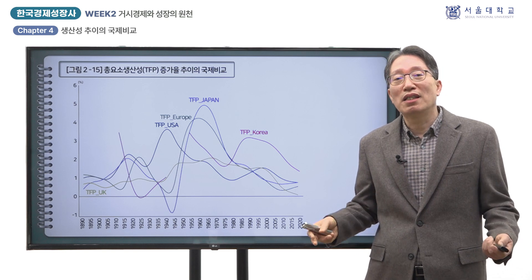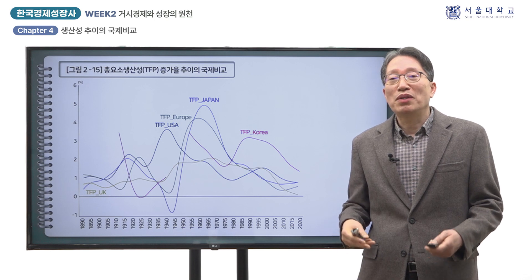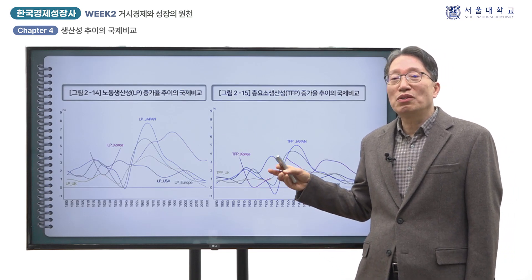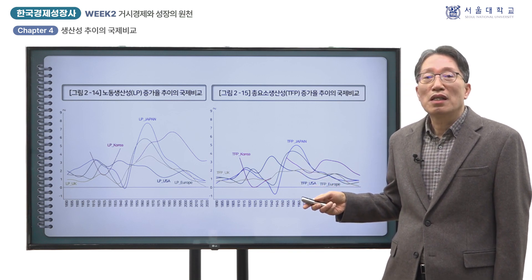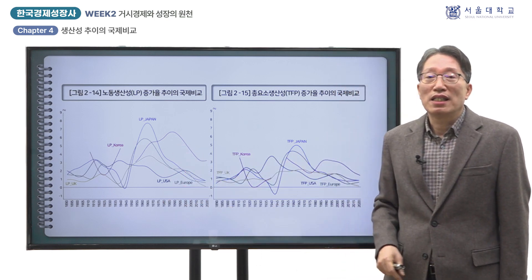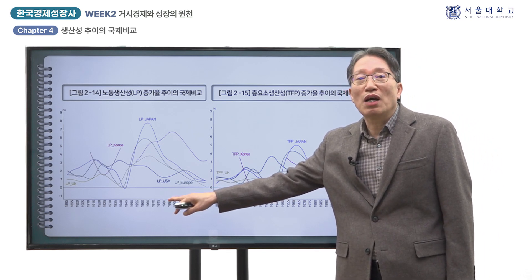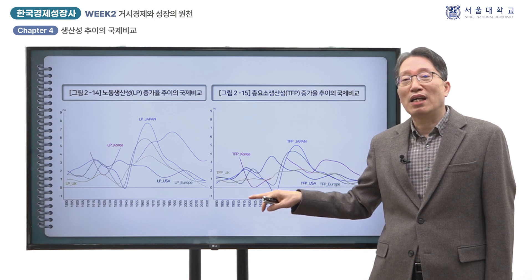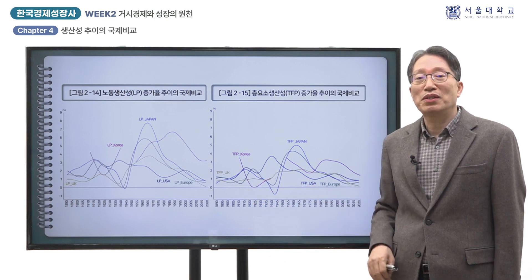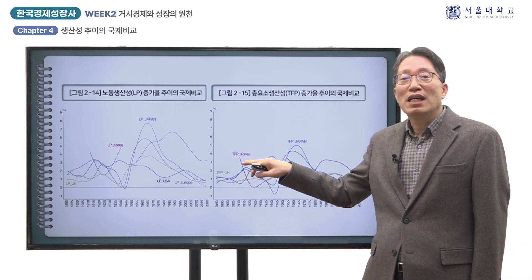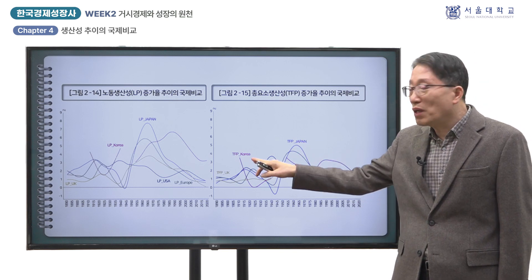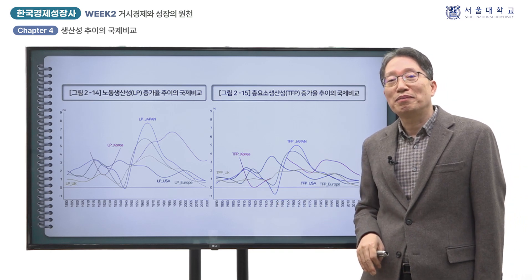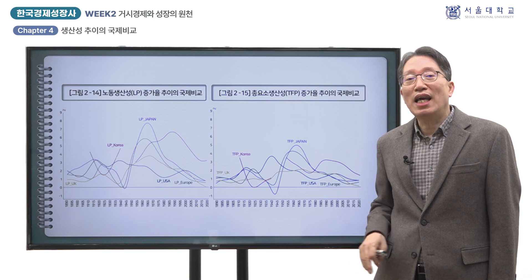따라서 선진국과 후진국의 생산성을 같은 시점에서 비교할 때에는 사회적 능력의 형성이나 자본의 축적과 같은 여건의 차이를 함께 고려할 필요가 있습니다. 셋째, 식민지기의 생산성 증가율은 해방 후에 비해 낮았습니다. 1930년대 LP 증가율이 빨랐지만 자본심화 효과를 빼면 TFP 증가는 미미해지며, 이는 식민지기에 인적 자본 투자와 사회적 능력 형성이 해방 후에 비해 뒤처져 있었기 때문입니다. 다만 식민지 초기 TFP 증가율이 높게 나온 것은 데이터 부족으로 가정에 의존한 추정의 영향일 수 있으므로 자료상의 한계에 유의할 필요가 있습니다.